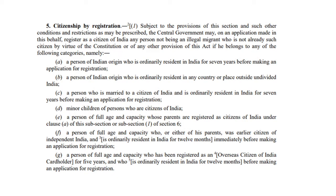Citizenship by Registration: Any person who falls under the following categories can apply for registration. Category 1: Persons of Indian origin who are resident in India and have been so residing for 5 years immediately before making an application for registration. Category 2: Persons of Indian origin — prior to the coming into force of the Citizenship Amendment Act of 1986, that is 1st July 1987, this period was 6 months.